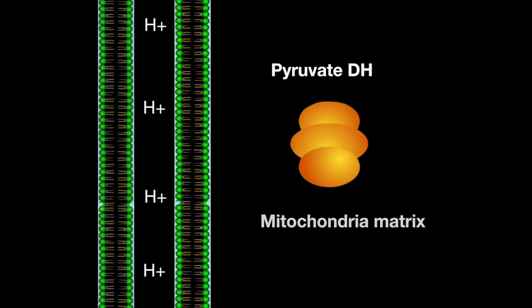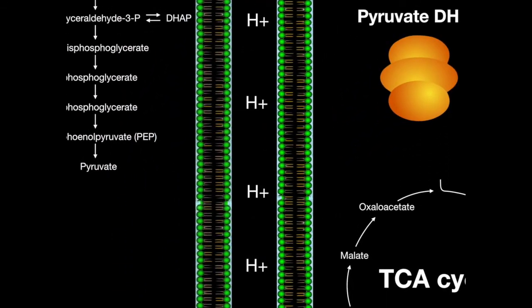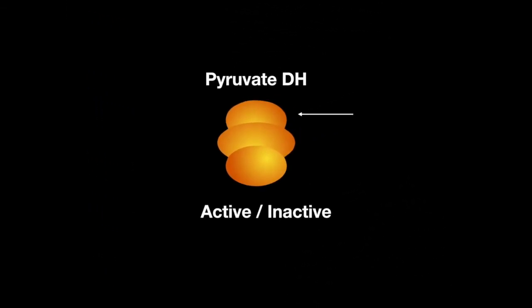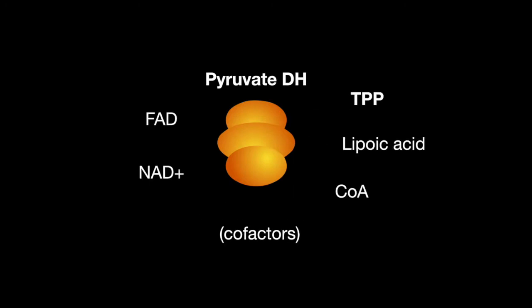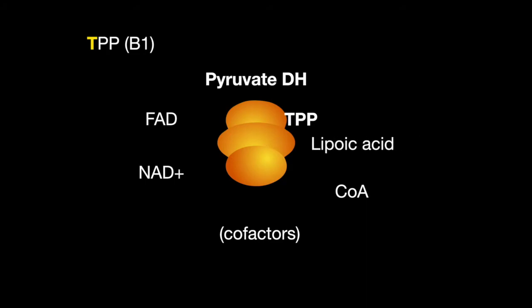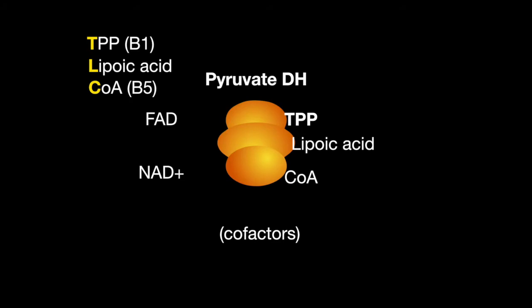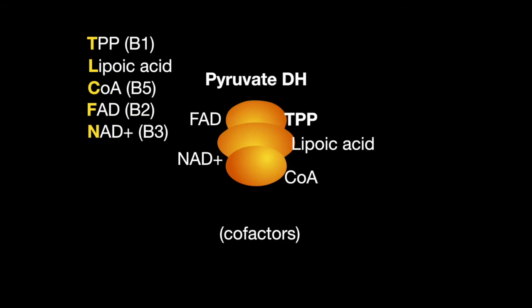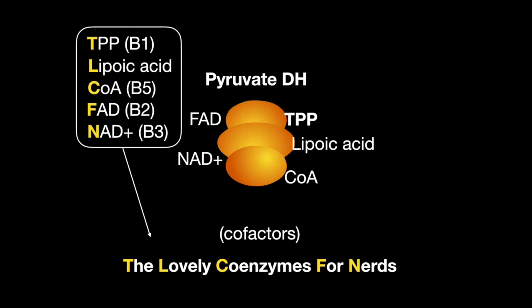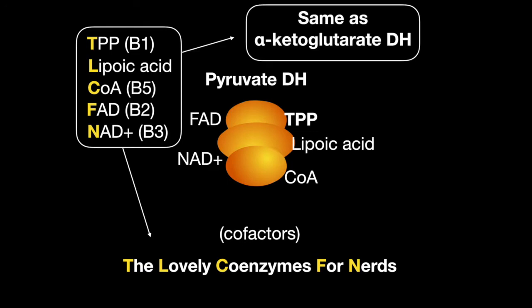Pyruvate dehydrogenase complex is located in the matrix of the mitochondria. It links glycolysis to the TCA cycle. It contains a total of three enzymes and five cofactors to function. The cofactors are thiamine pyrophosphate from vitamin B1, lipoic acid, CoA from pantothenic acid or vitamin B5, FAD from B2 or riboflavin, and NAD+ from B3 or niacin — the lovely coenzymes for nerds. This complex contains the same cofactors as the alpha-ketoglutarate dehydrogenase complex.